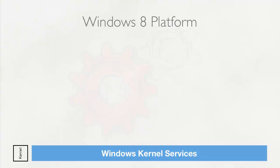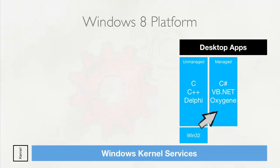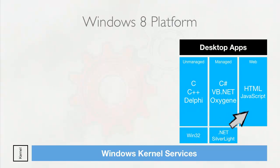Let's talk about the Windows 8 platform. At the base it's still running Windows kernel services but there are two different application development paradigms. For existing desktop apps, you have unmanaged apps written in C, C++ or Delphi — these run on the Win32 API. Then you have managed applications written in C#, VB.NET, or Oxygen running on Silverlight or the .NET Framework. And finally, web applications developed using HTML or JavaScript run in the browser and interact with the DOM — each using a different API.